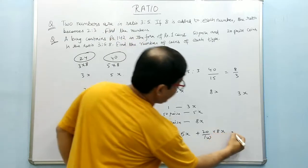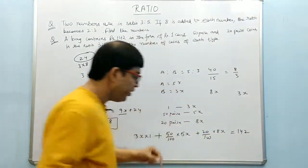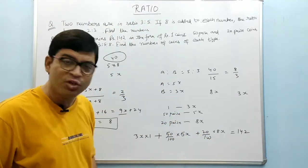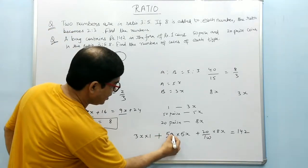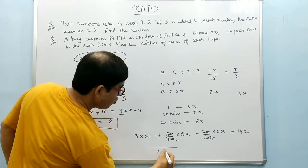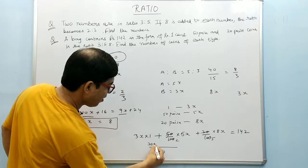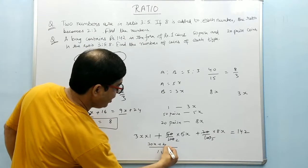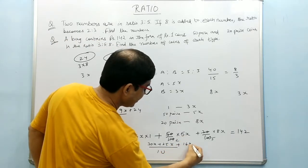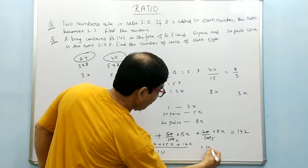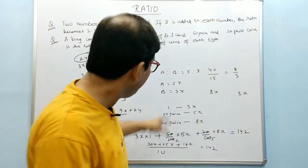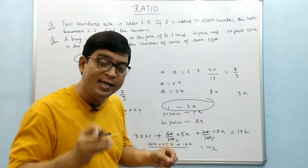Setting the total equal to 142, we solve for x. Taking LCM as 10, we get 30x plus 25x plus 16x equals 142. Adding up gives 71x equals 142, so x equals 2. Once you have the value of x, you can easily find the number of coins of each type.